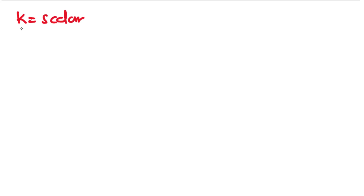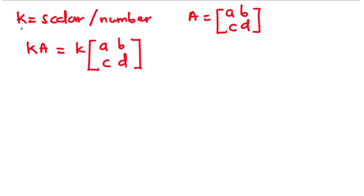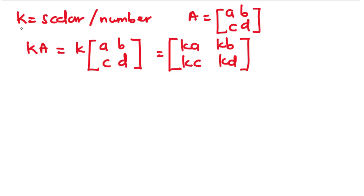Let K be a scalar or any number and A be a matrix. Now we have matrix A to be A, B, C, D. The scalar multiplication of K and A is given by K times A, which is equal to K times the matrix [A, B, C, D]. Now to multiply a matrix by a scalar, we are basically going to multiply each element of the matrix by the scalar. So that is K·A, K·B, K·C, and K·D.